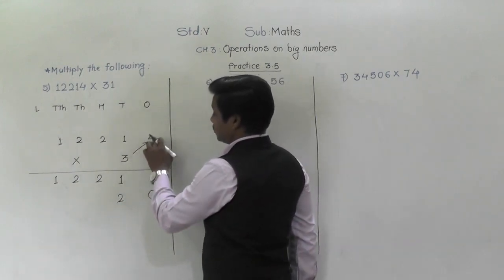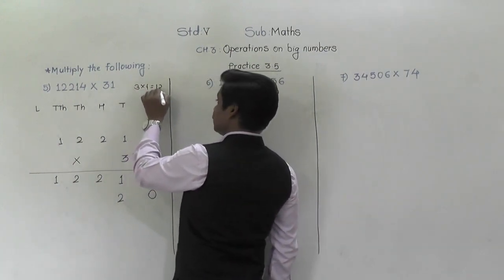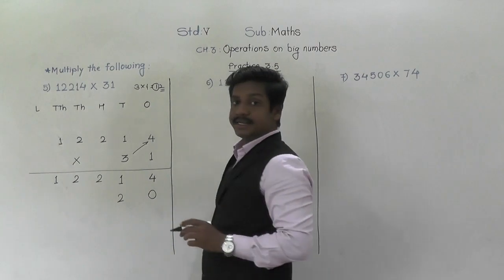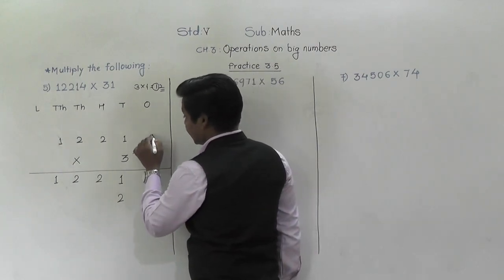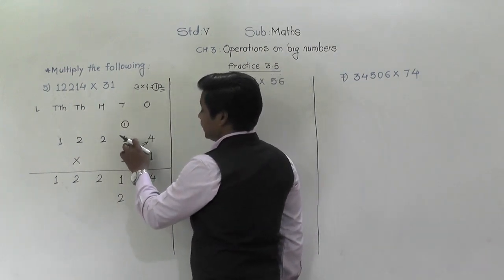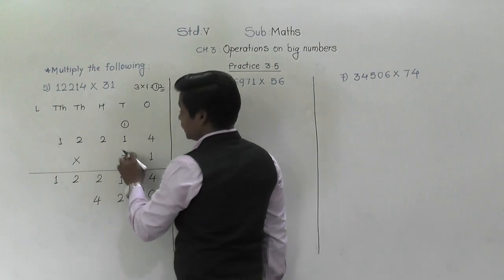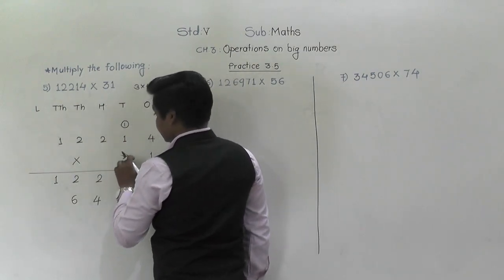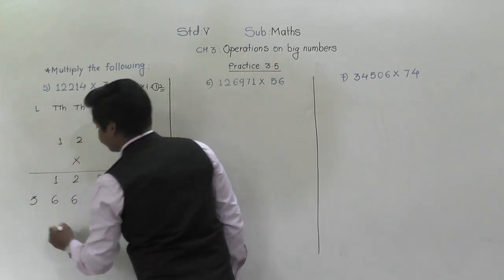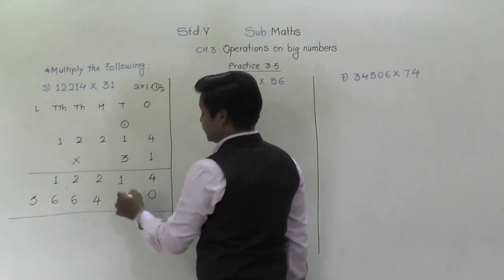We have written two at the tens place because this is the tens place digit, so we start writing its answer from tens place. Three ones are three plus one is four. Three twos are six. Three twos are six. And three ones are three. This is the multiplication by the ones place digit (one), and this is the multiplication by the tens place digit (three).